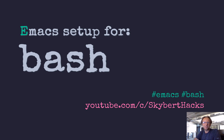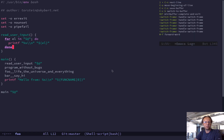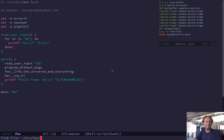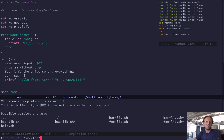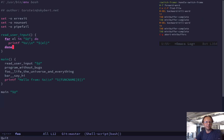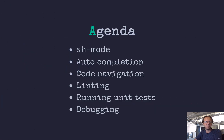Hello, welcome to Skybird Hacks. Today I will show you how to set up Emacs for bash programming, like properly. I have a sample project here called Foo — it's like the command you have to run, and then you have a couple of library files and some tests as well. So it goes through everything: SH mode, auto-completion, code navigation, linting, running unit tests from Emacs, and running a debugger.